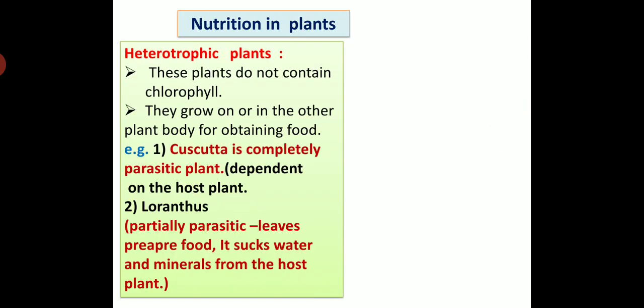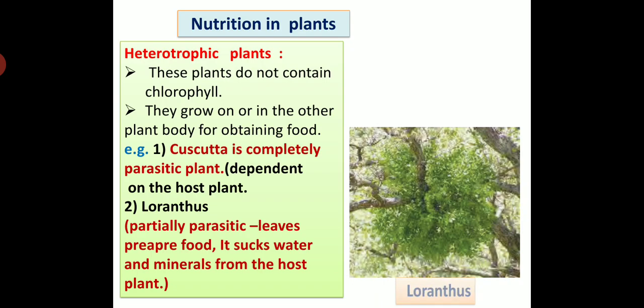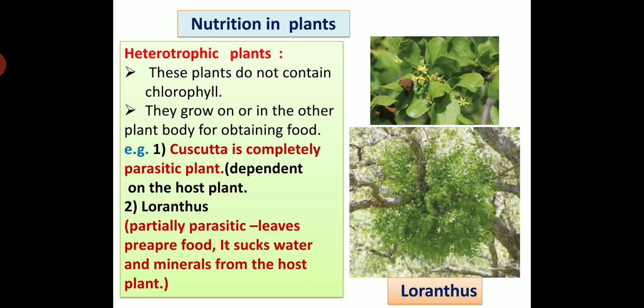Heterotrophic plants: these plants do not contain chlorophyll. They grow on or in the other plant body for obtaining food. For example, cuscuta. Cuscuta is a completely parasitic plant. This plant depends on the host plant. And second example, loranthus. Loranthus is partially parasitic. It means its leaves can prepare food, but it sucks water and minerals from the host plant, and so it is partially parasitic. You can see in diagram plant of loranthus and also the host plant.